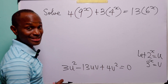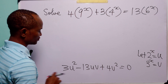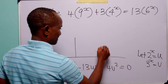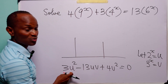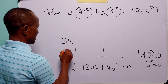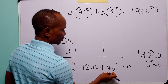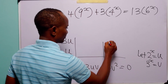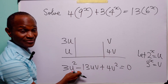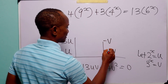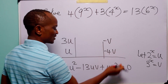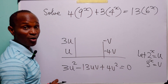We can solve this quadratic equation by factorization using the table method. The factors of 3u squared are 3u and u, while the factors of 4v squared are 4v and v. Because of the negative sign, we make these minus v and minus 4v, since minus v times minus 4v gives us plus 4v squared.